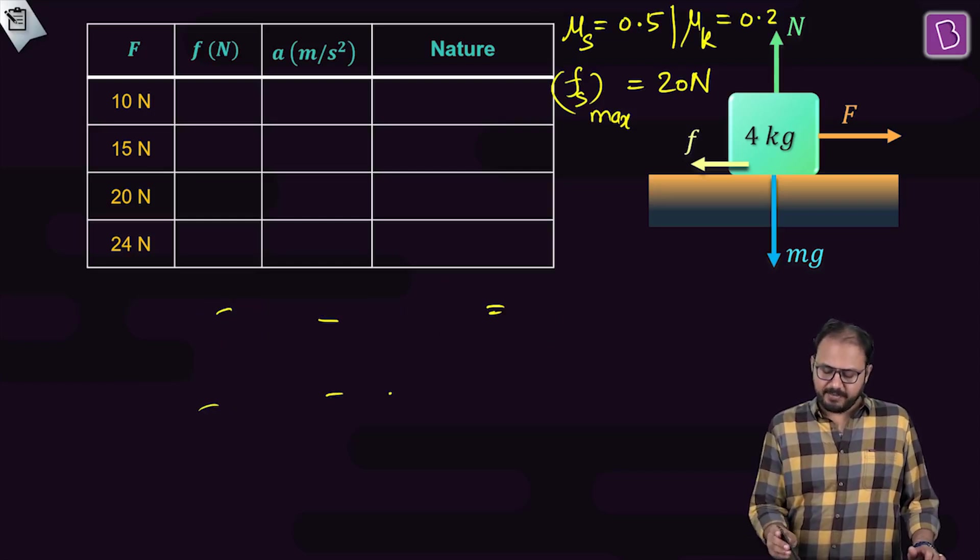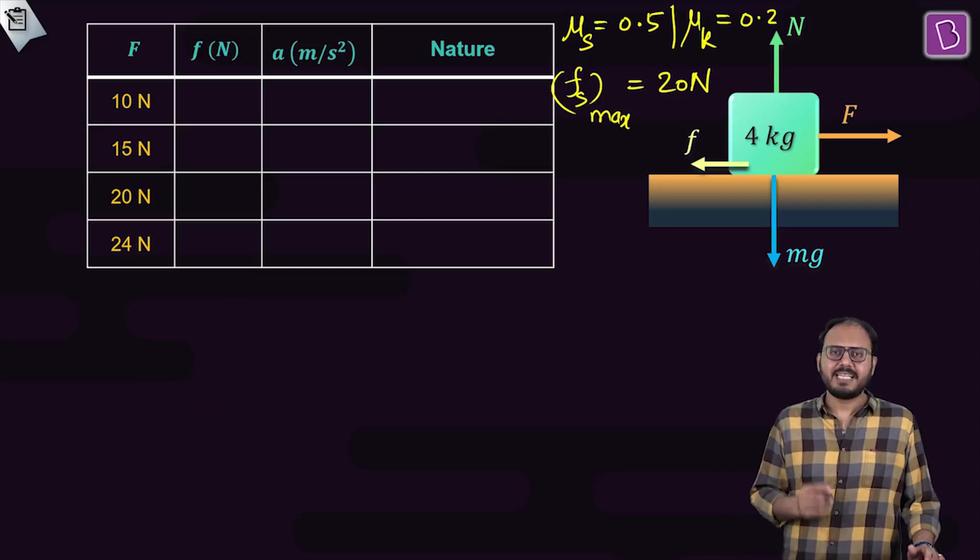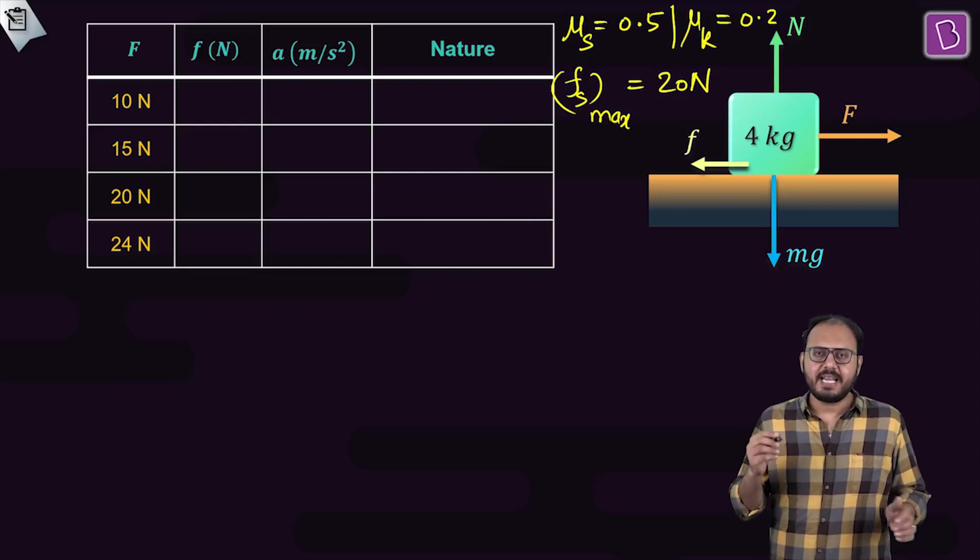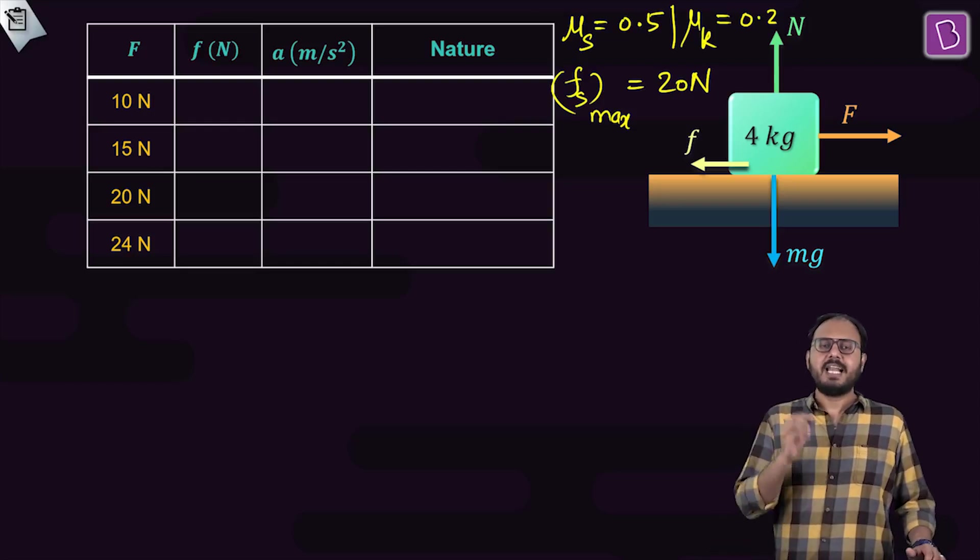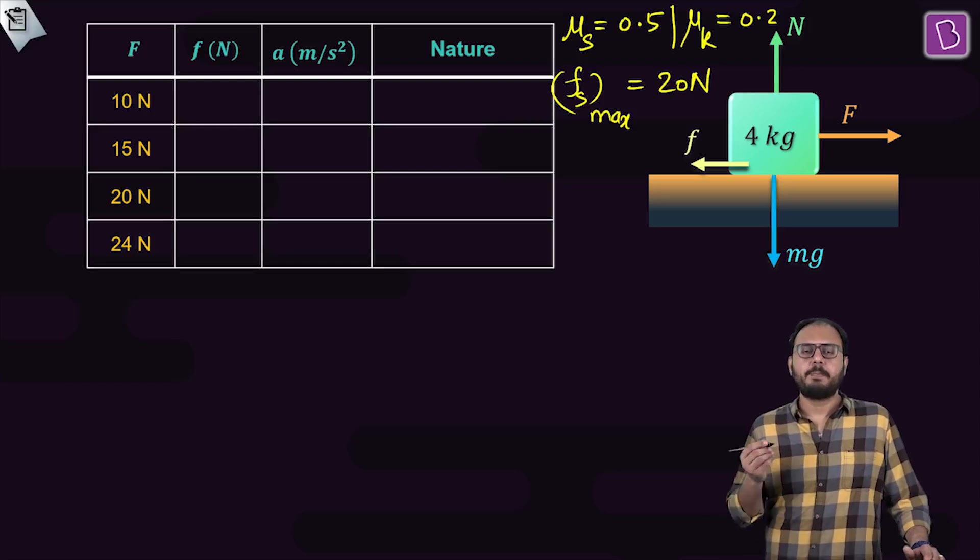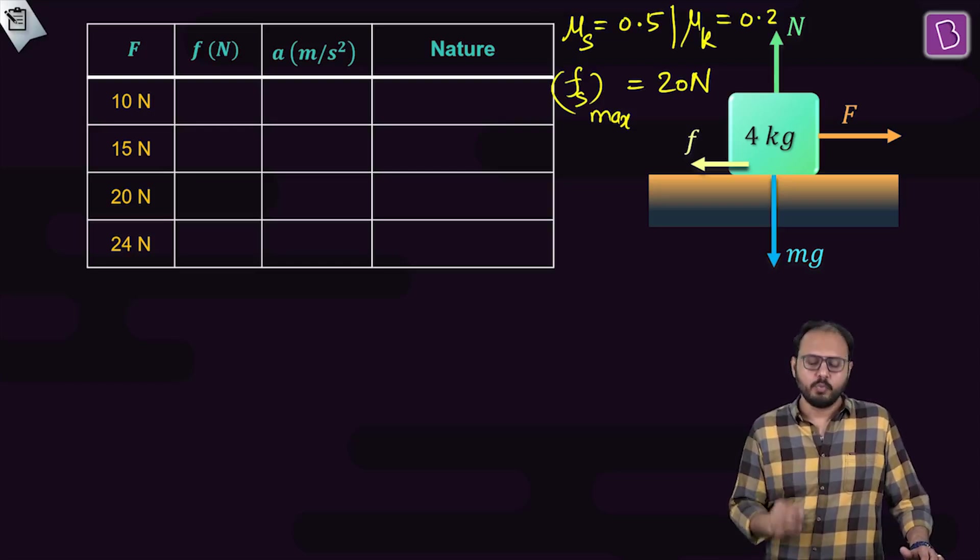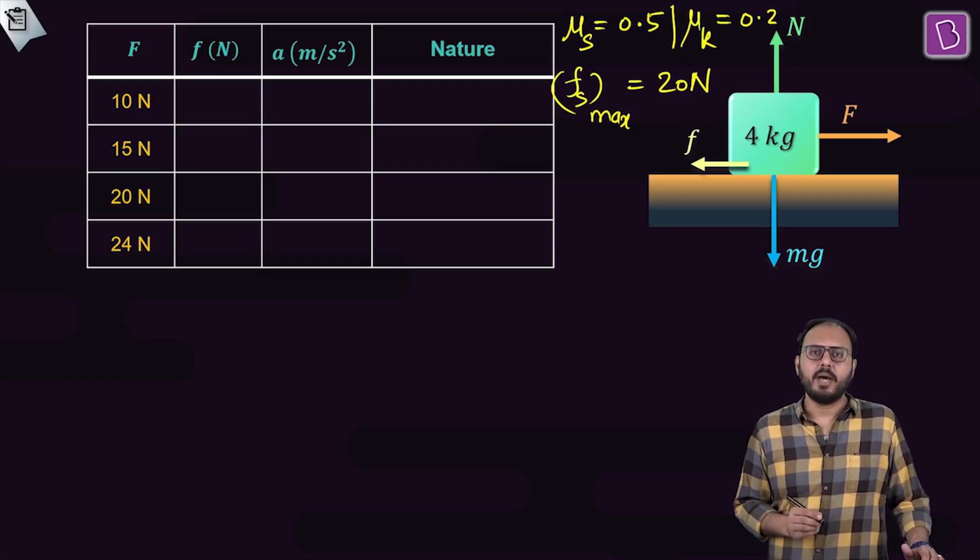Why did I find fs max first? Because I know if a force is less than fs max, the particle or the block will not move.